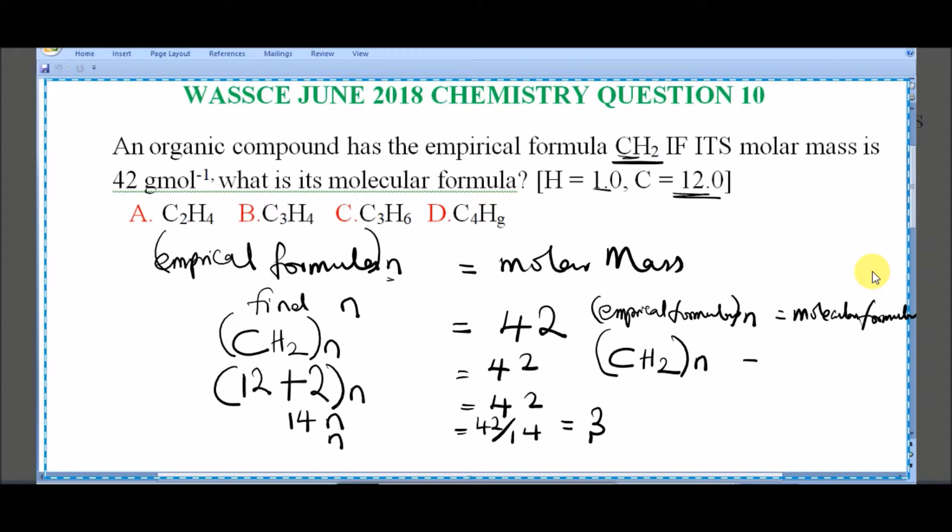So when you multiply it by N, you will get what we are looking for, which is the molecular formula. If N is equal to 3, you will now have CH2 bracket 3 to get the molecular formula. So if you open this bracket, you have C3. This 3 will go in, C3.